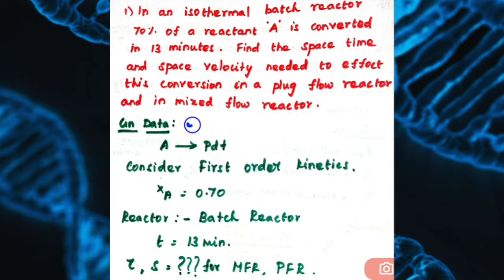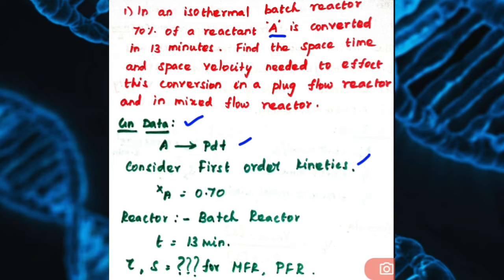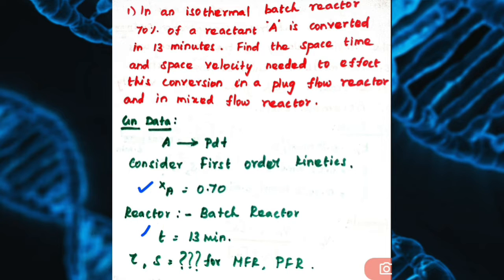To solve this problem, first write the given data. Reactant A is converted into some product, so your reaction is A gives product. Here only one reactant is involved in the reaction, so assume first order kinetics. They have given 70% of reactant A is converted in 13 minutes, so XA = 0.70 and T = 13 minutes. Using these data from the batch reactor, we have to calculate space time and space velocity for mixed flow reactor and plug flow reactor.